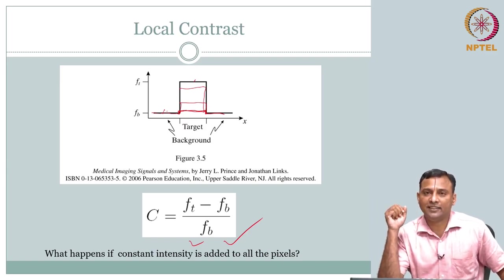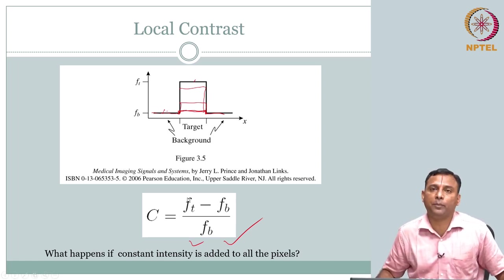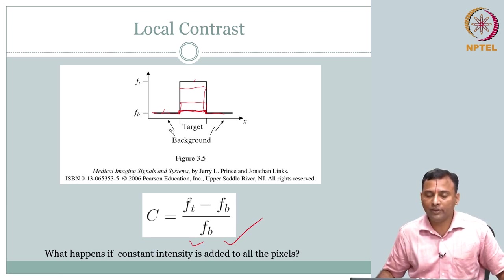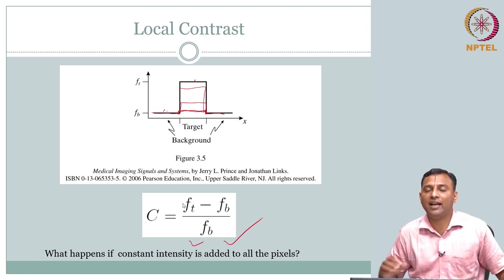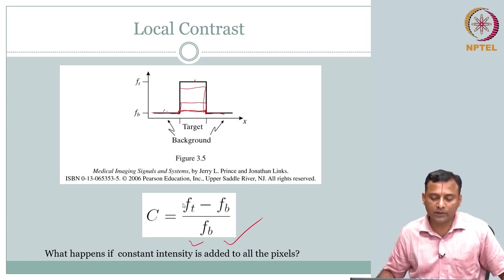So, contrast. If you had tried what happens if you add constant intensity to all the pixels, mathematically it would tell you that the contrast goes down. I hope that is what you qualitatively observed as well. But let us move on beyond contrast. The other image quality metric we want to proceed towards is another very important one: resolution.